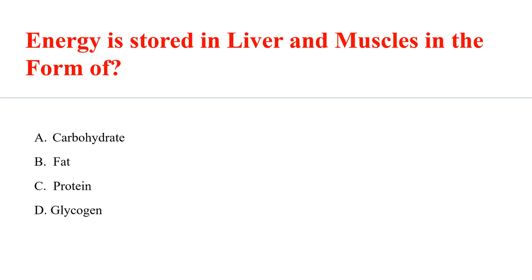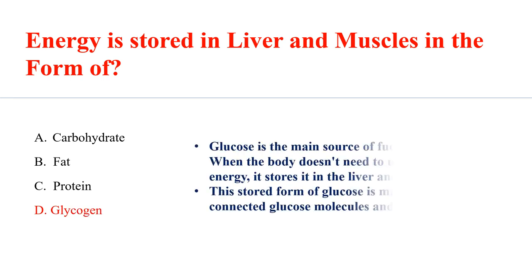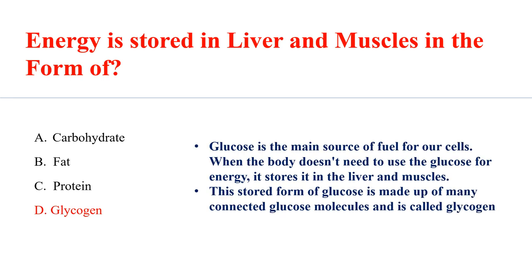Energy is stored in the liver and muscles in the form of glycogen. Glucose is the main source of fuel for our cells. When the body does not need to use the glucose for energy, it is stored in the liver or muscles. This stored form of glucose is made up of many connected glucose molecules and is called glycogen.